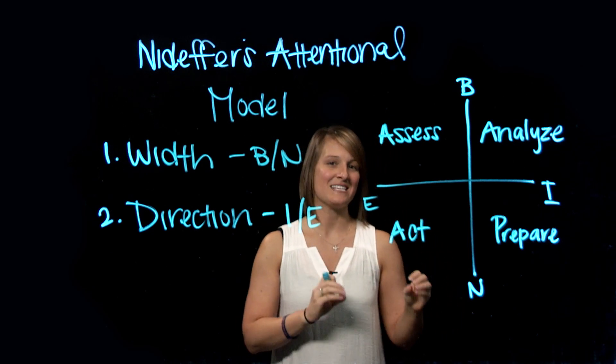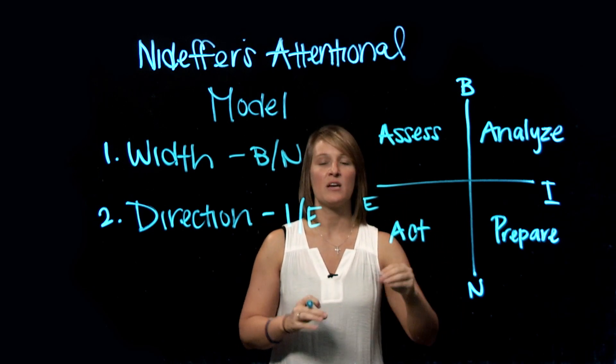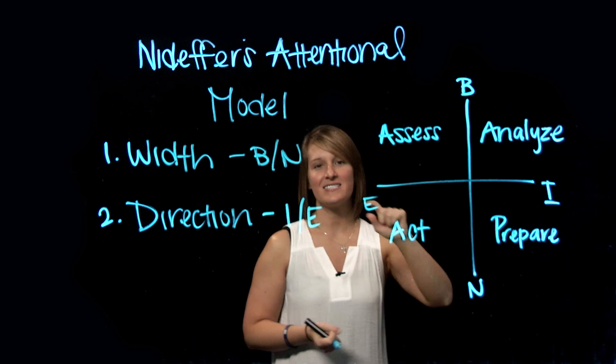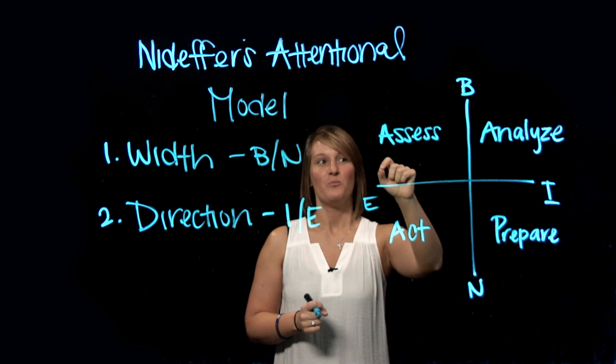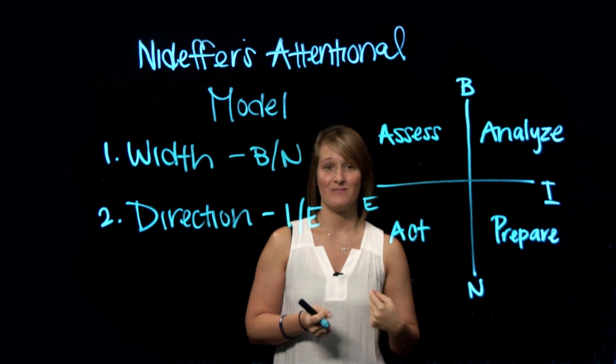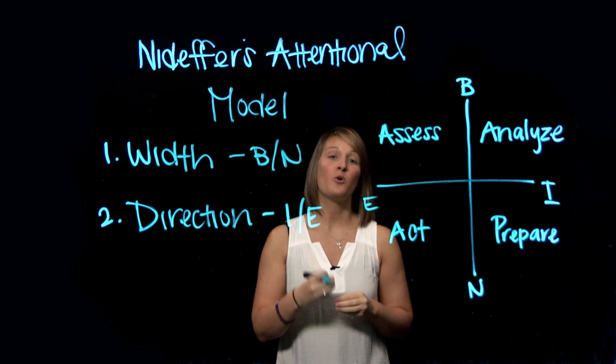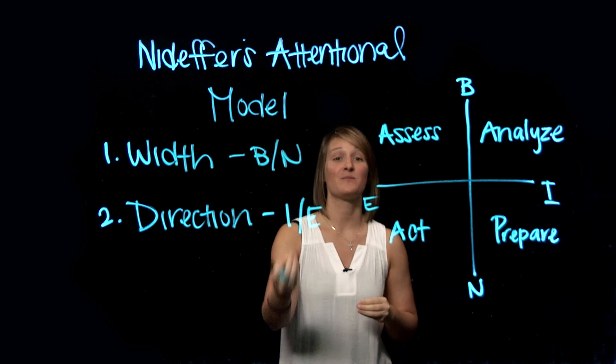So the important piece about this model, you might be thinking, well, what's best? Where do I need to be? And the amazing thing is that at any given point in time, there might be places for all of them. So instead of thinking one is right or one is wrong, it's more about where do I need to be in this moment?